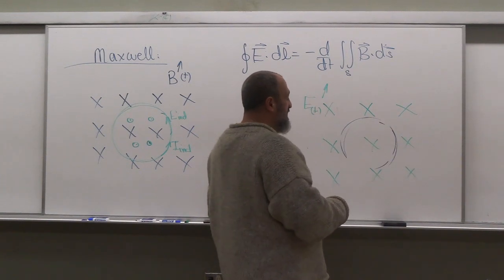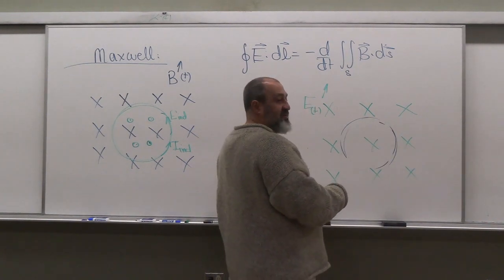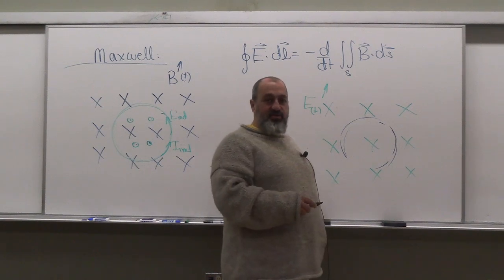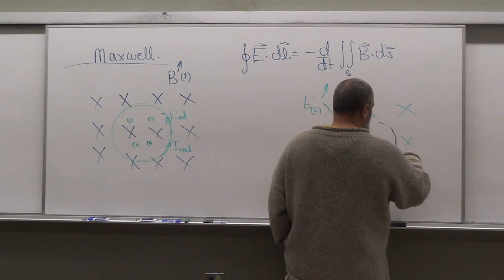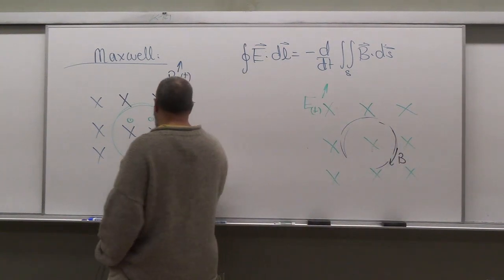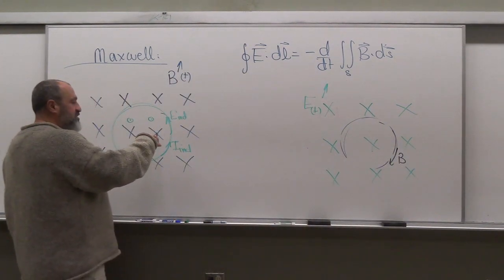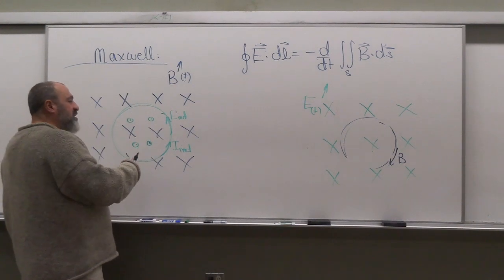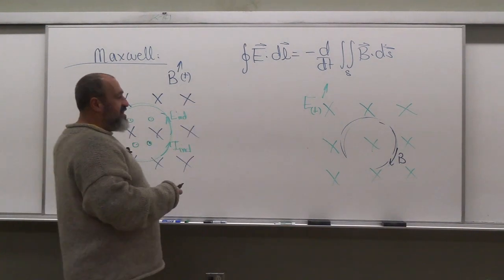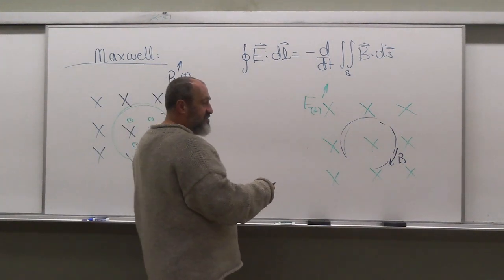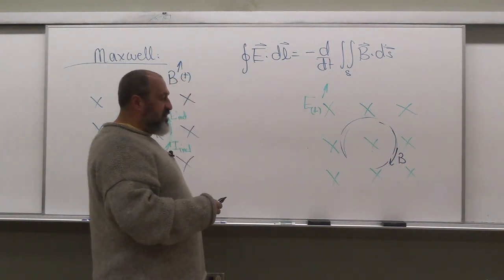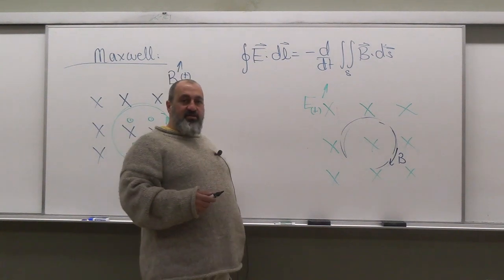...by the same token I can go around and say that I have a given loop here and now I have a magnetic field created. There's more to it than a fairness argument, but there is a magnetic field created this way. You see how the electric field acts in such a way so as to create a magnetic field that opposes the change. This is the second part of Ampere's law.